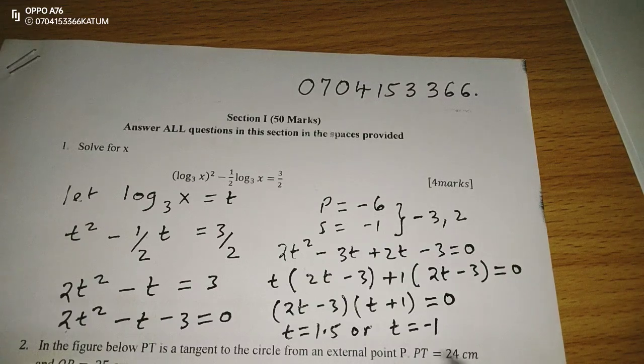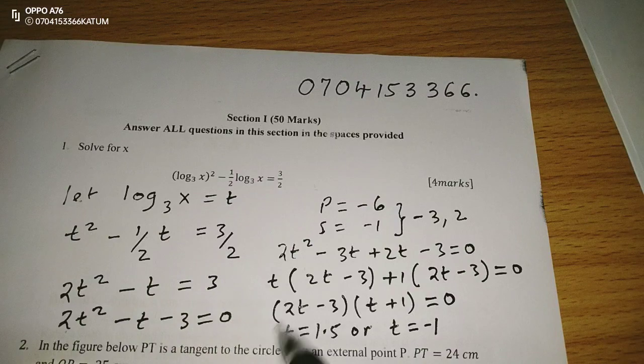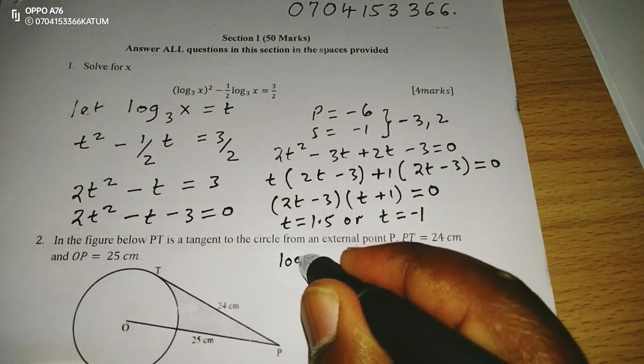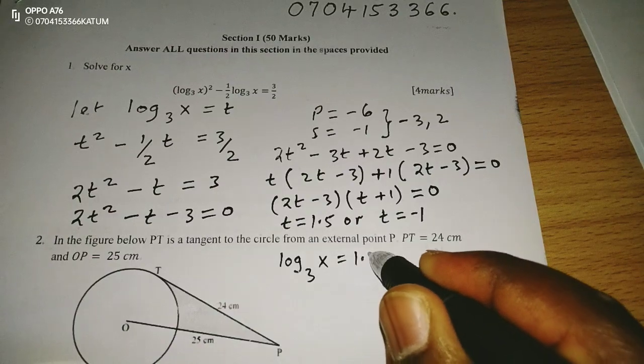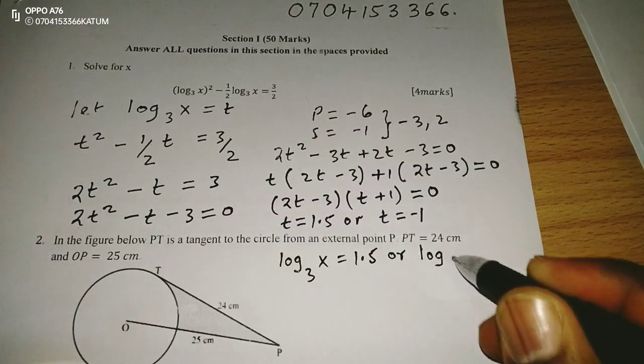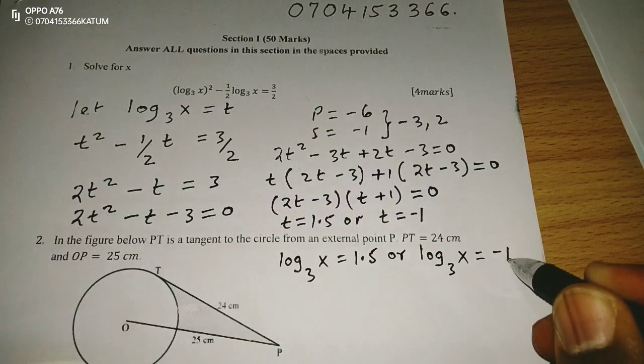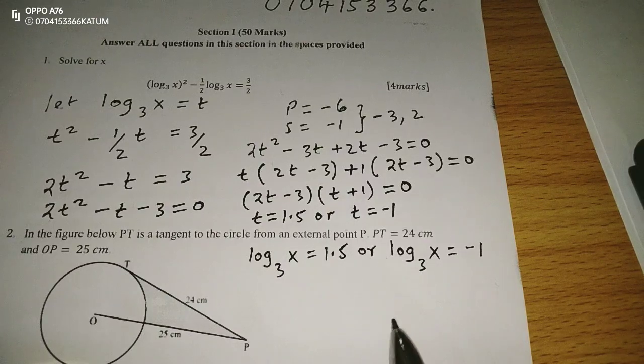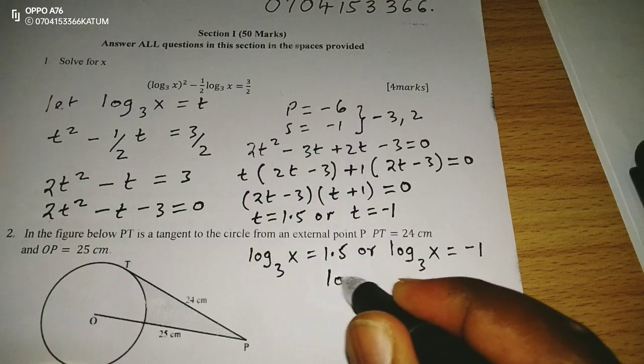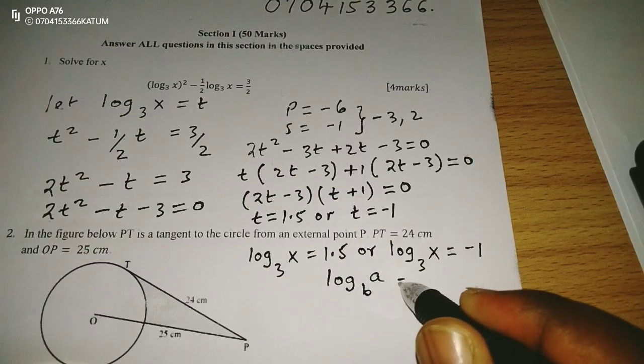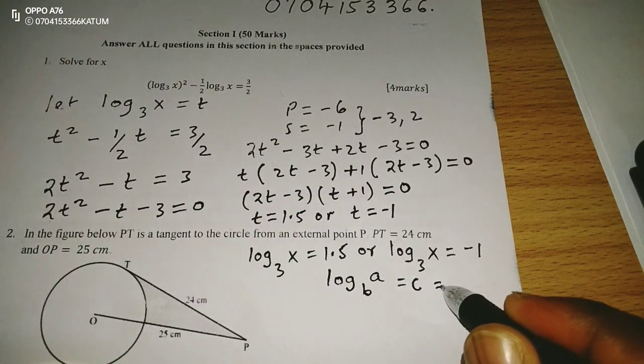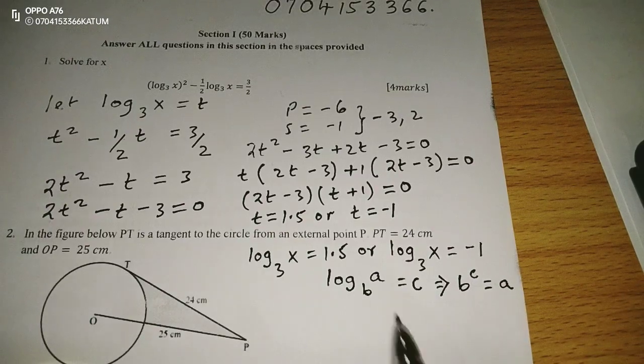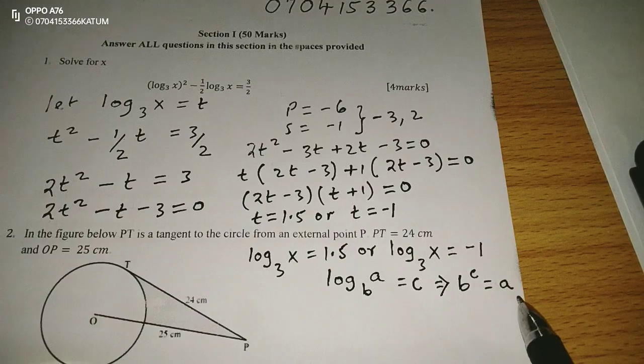But we should remember that the value of t should be equated to the logarithm of x to base 3. Therefore, the logarithm to base 3 of x is equivalent to 1.5 or the logarithm to base 3 of x is equivalent to negative 1. Now we are going to change the logarithm equations into index notation. If we have the log of a to base b equals to c, then this implies that when we convert this to index notation, b power c should give us the value of a.